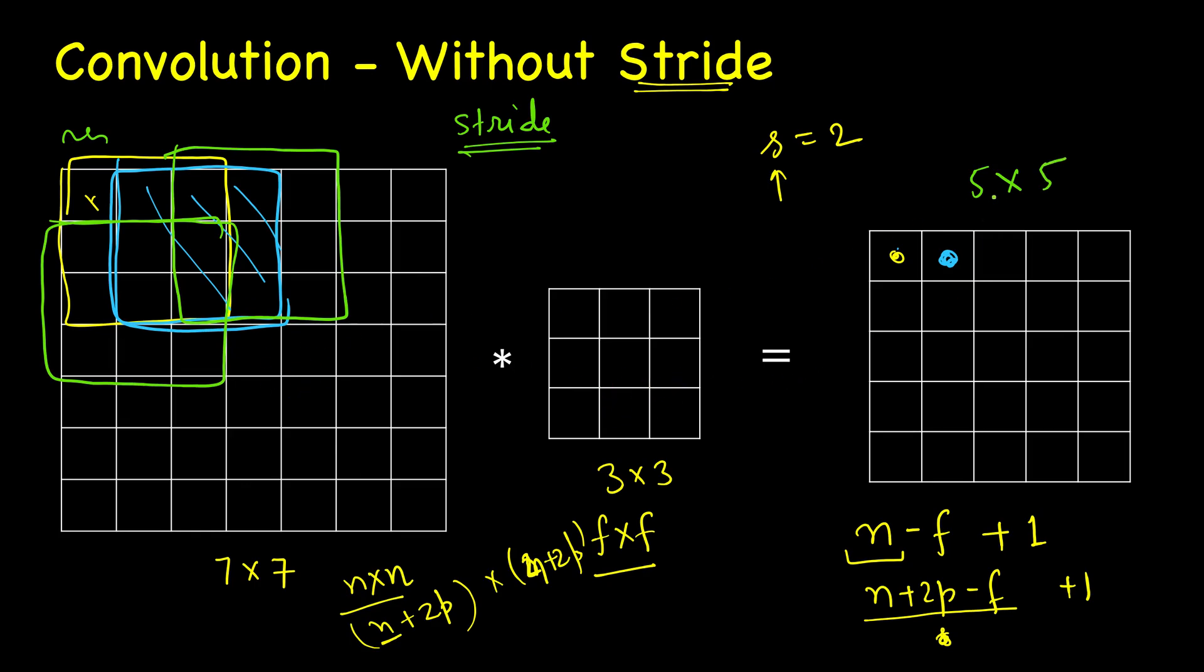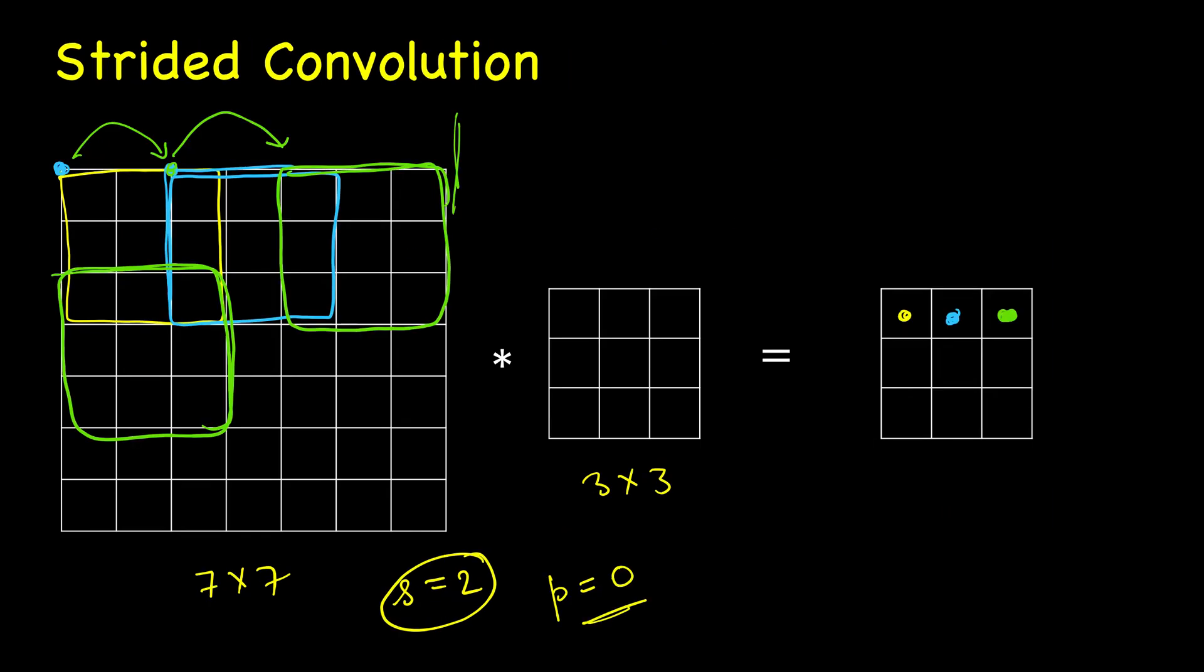So you see that just in three steps we have reached the end. This way we will calculate this and now we will shift down by two steps. Here the output size was 5 cross 5 with the same input image, same kernel, same filter.